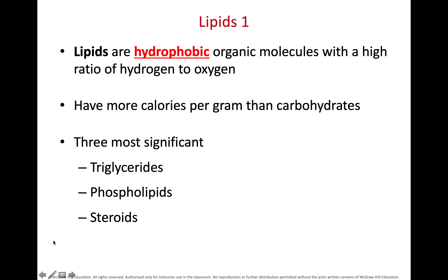Lipids have nine calories per gram, whereas proteins and carbohydrates have four calories per gram. The three most significant lipids are the triglycerides, the phospholipids, and the steroids. There are other lipids such as fatty acids or the eicosanoids, but we're going to focus on the big three.